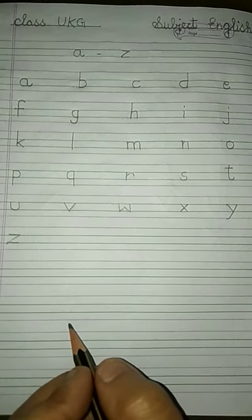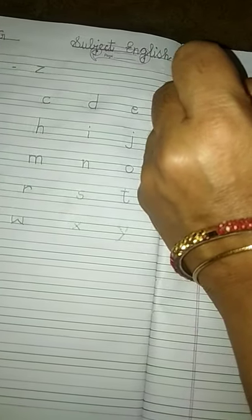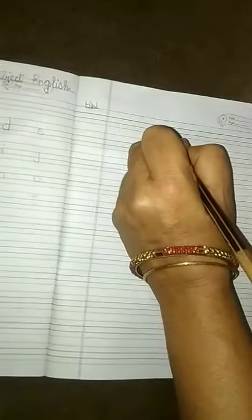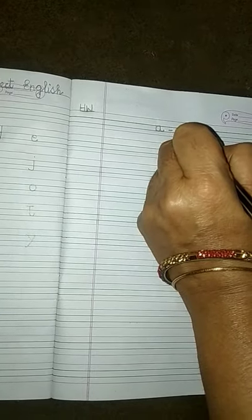Now this a to z you have to practice at home. You will practice at home as it is written here — you have to practice like that only, in one line, five letters each. And the last Z will be here. Thank you.